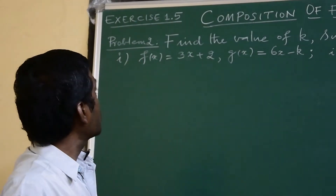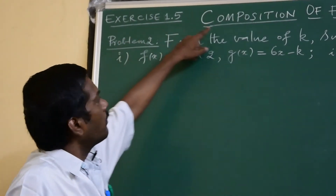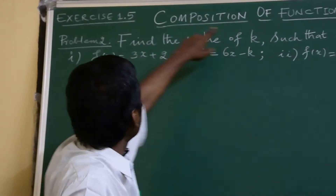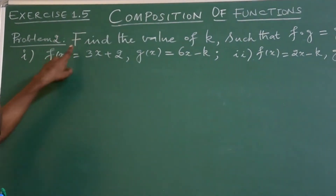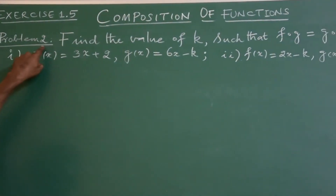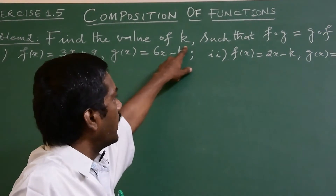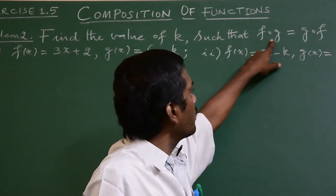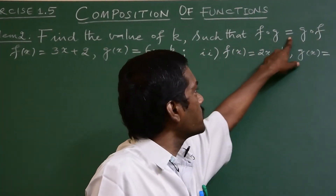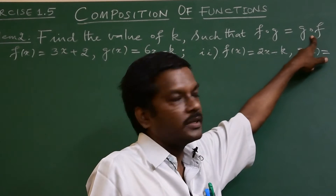Welcome back students. We are going to do exercise 1.5, problem number 2: find the value of k such that f composite g is equal to g composite f.